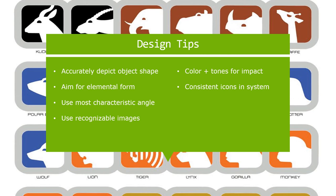Design tip six: consistent icons in system. This is one of the key tips for our current project. You have to treat all the icons within the system consistently in terms of style of visualization, perspective, and how close or far you are from the animal. As a general rule, if one icon is cropped they should all be cropped; if one animal is facing left they should all be facing left. If your signs have a lighting source with visual detail, make sure that lighting source is consistent and all objects are shaded consistently.